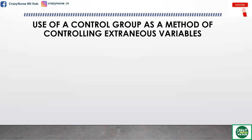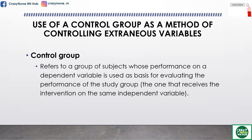Also, we have the use of a control group as a method of controlling extraneous variables. All the major activities in an experimental research design lead to the control of extraneous variables — namely by manipulating, by randomizing, by carefully preparing the research protocol, and by using a control group. A control group is a group of subjects whose performance on a dependent variable is used as the basis for evaluating the performance of the study group, which is the one that receives the intervention on the same independent variable.